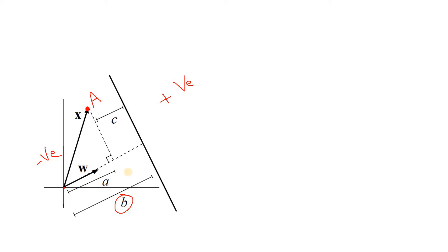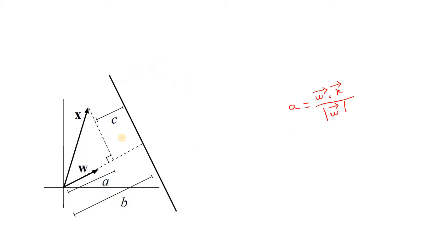We can clearly conclude that C is nothing but B minus A, where A is the projection of this particular point A in the direction of W. W is the direction which is perpendicular to this linear separator — we can write it in unit vector notation as W-vector divided by the magnitude of W-vector. If we take this projection we get the value A.